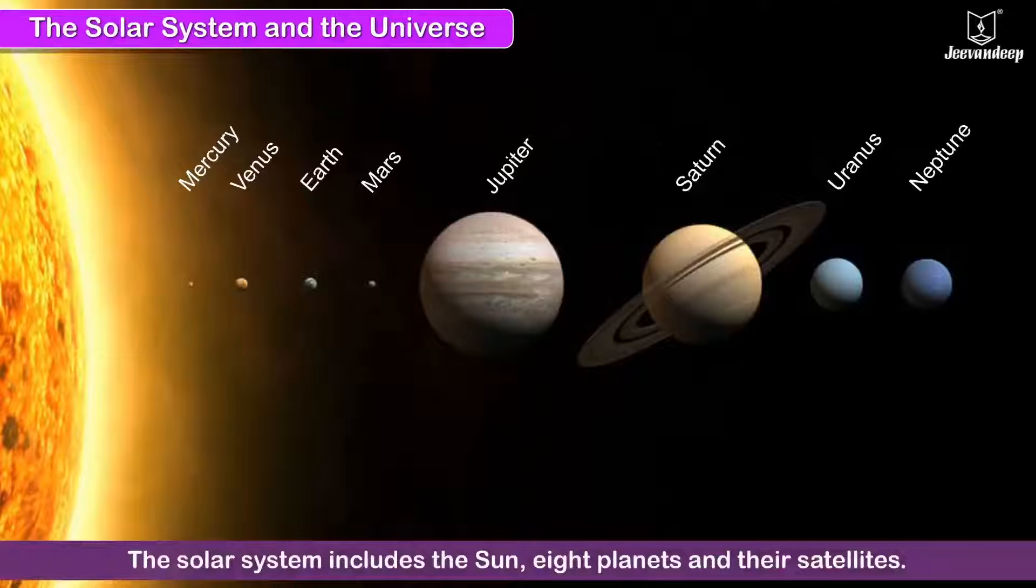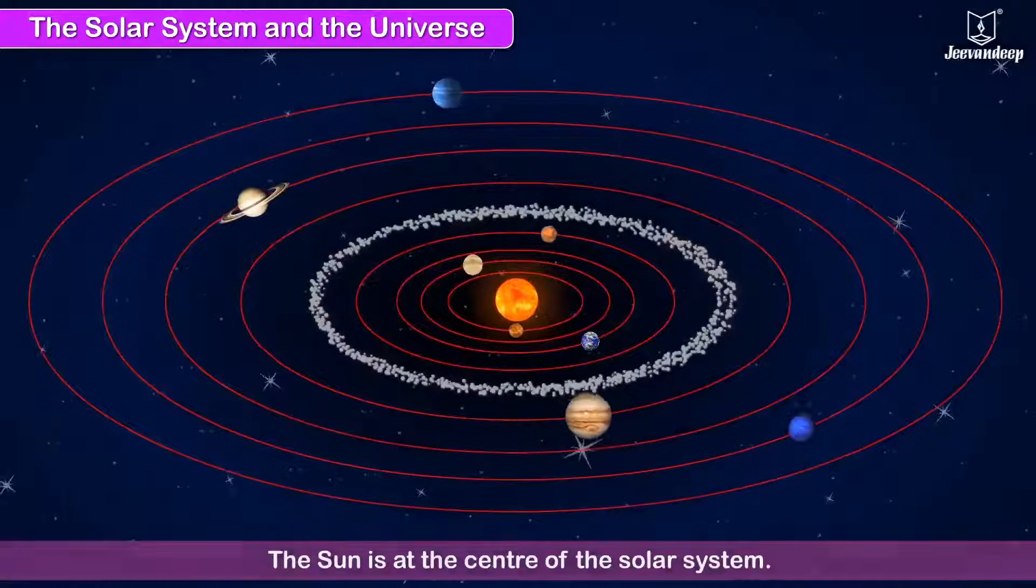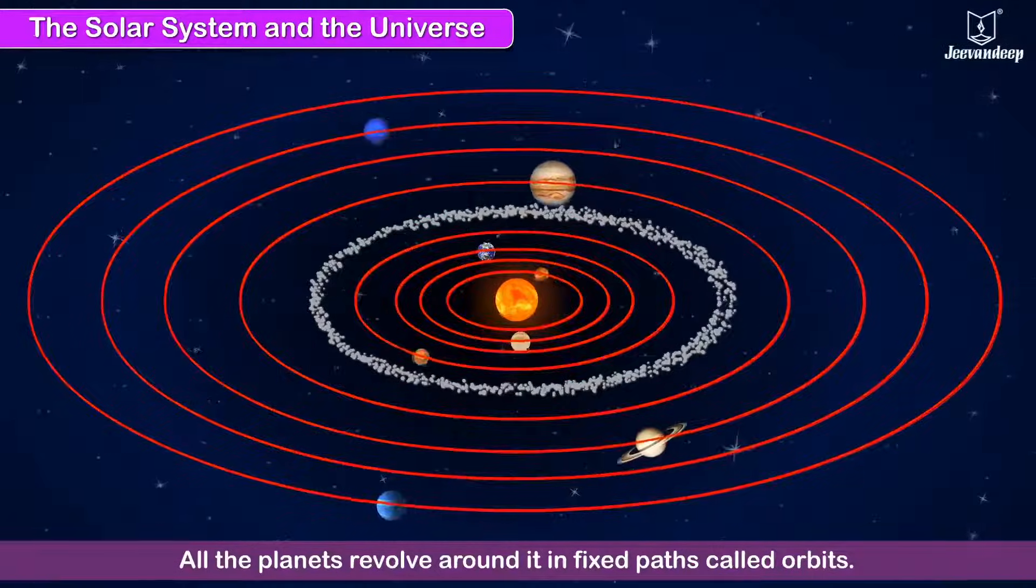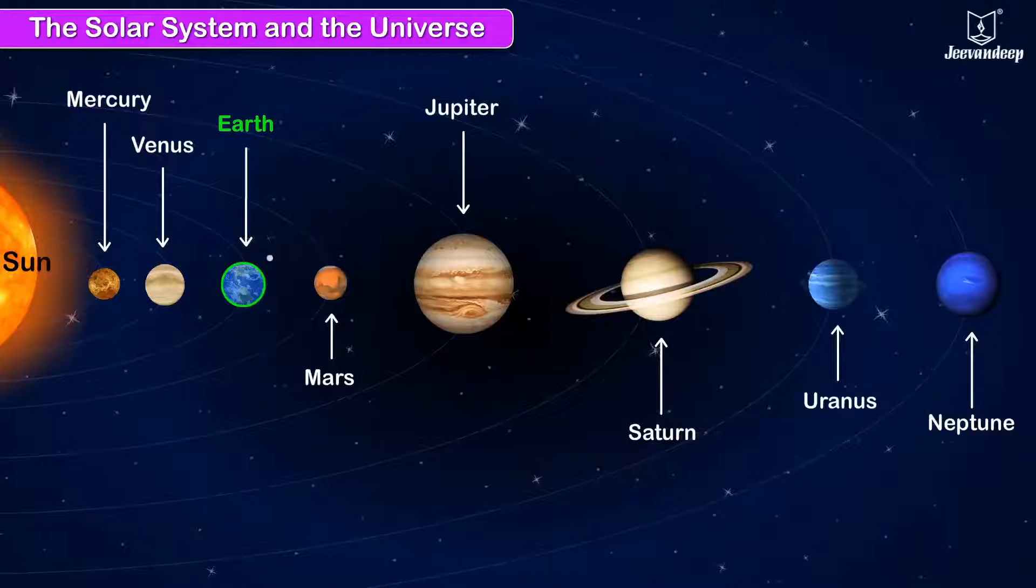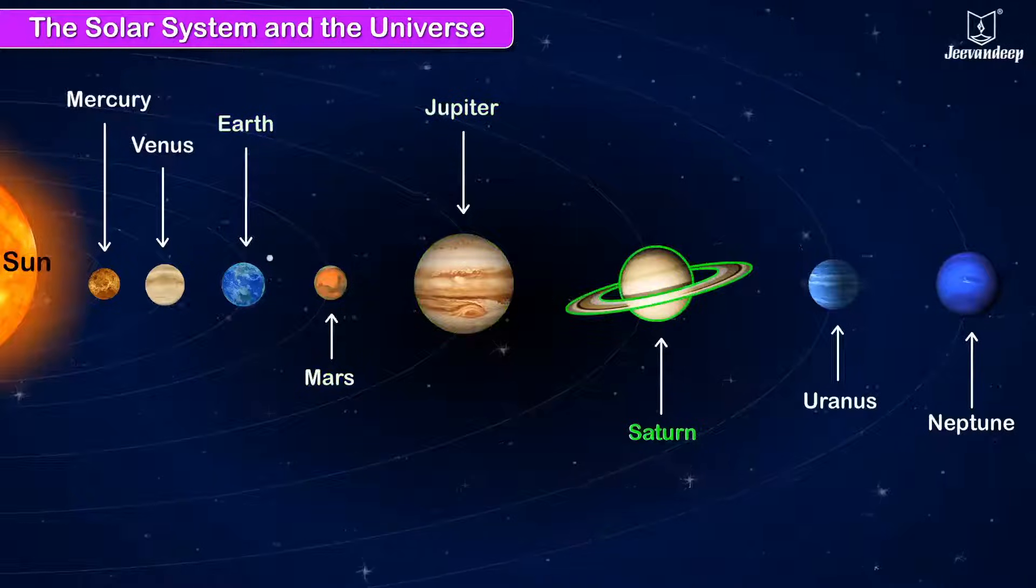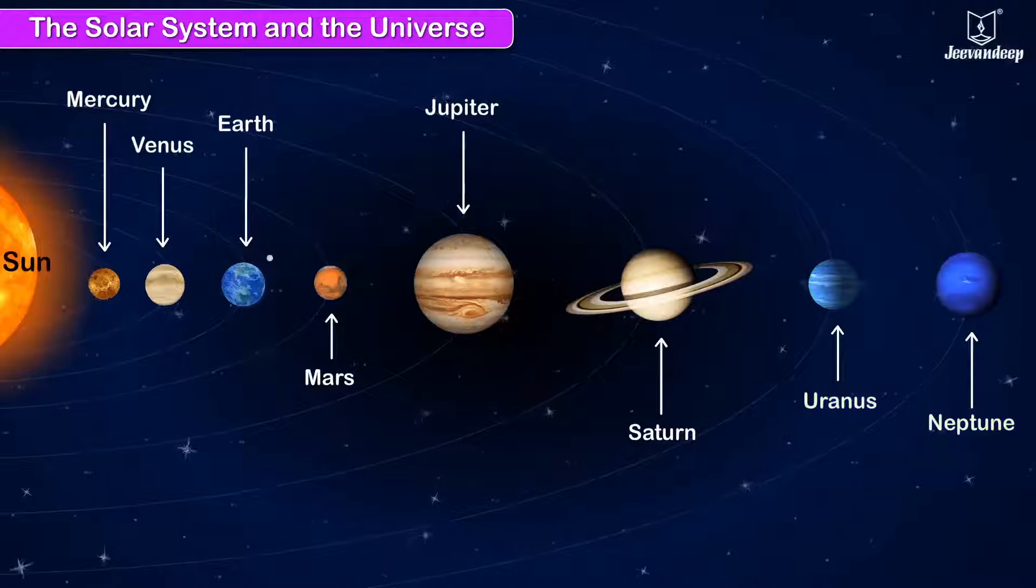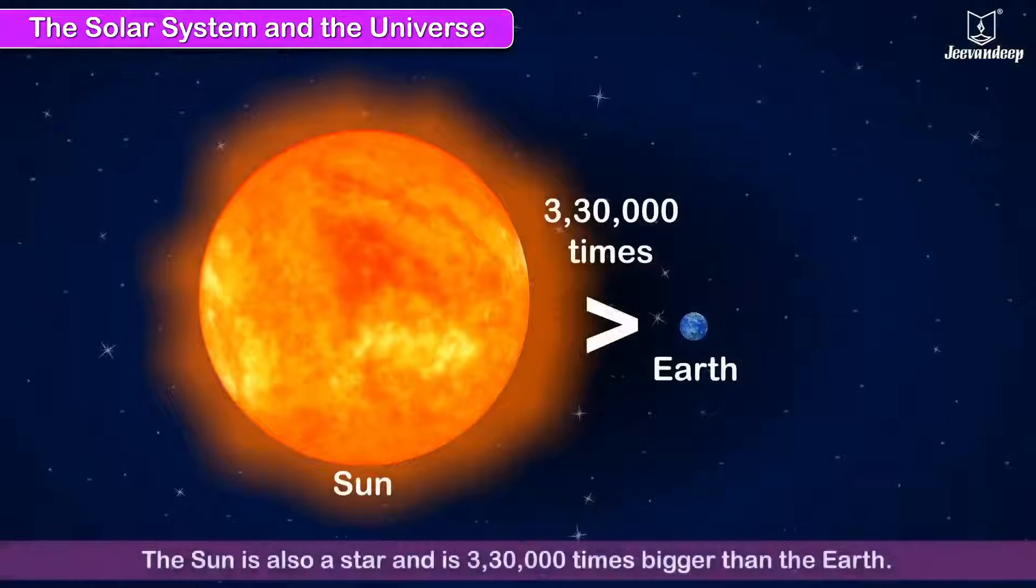The solar system includes the Sun, eight planets, and their satellites. The Sun is at the center of the solar system, and all the planets revolve around it in fixed paths called orbits. Mercury, Venus, Earth, Mars, Jupiter, Saturn, Uranus, and Neptune are the eight planets of the solar system and move in that order around the Sun.